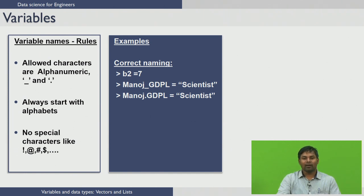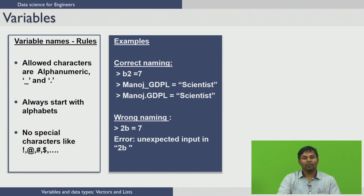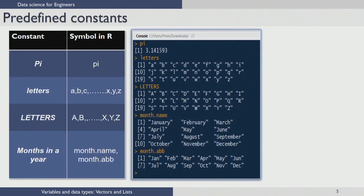Now let us see examples where variable names are not correct. The variable 2B = 7 gives an error because the variable name starts with a numeric character, which violates the naming rules in R. R also contains predefined constants such as pi, letters (lowercase a to z), LETTERS (uppercase A to Z), month.name for full month names, and month.abb for abbreviated month names.